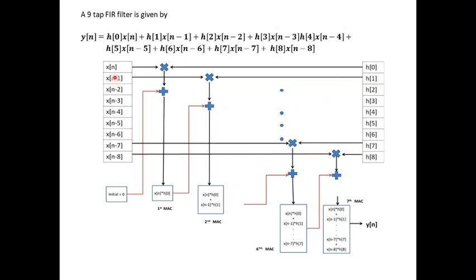The number of taps specifies the number of multiplications that we are going to perform and additions that have to be performed simultaneously. x(n) represents the input samples and h(0) up to h(8) represents the filter coefficients.